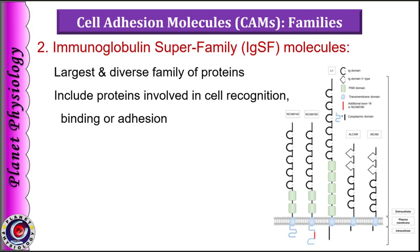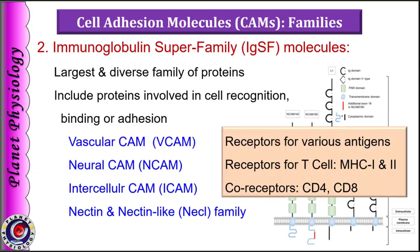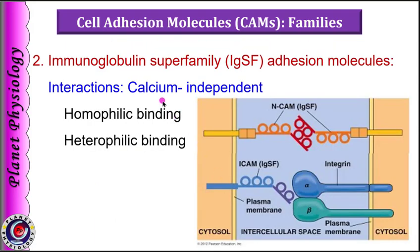The next adhesion molecule is the immunoglobulin superfamily. It is one of the largest and most diverse families of proteins and includes proteins involved in cell recognition, binding and adhesion. These are usually classified into vascular, neural, intercellular and nectin cell adhesion molecules. Some important immunoglobulin superfamily molecules are class 1 and 2 major histocompatibility complex proteins, coreceptors on T cells like CD4 and CD8, and receptors for various antigens. All these members possess one or more immunoglobulin-like domains.